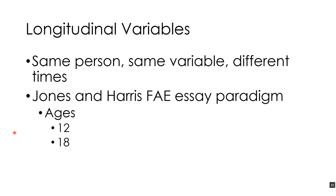The second type of data for a paired t-test is longitudinal variables — the same person, the same variable, but at different times. For example, studying the development of the fundamental attribution error, we could track the same people at ages 12 and 18, using the Jones and Harris FAE essay attribution paradigm at both time points. This lets us see whether they change in their responses and also controls for individual differences.